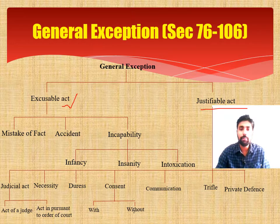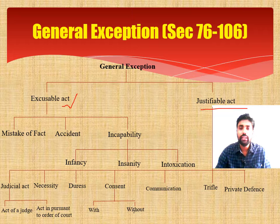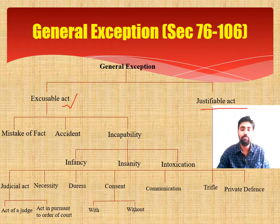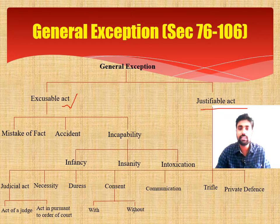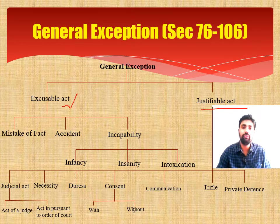If a child is above seven years but below twelve years and commits a crime, whether he shall be responsible for the offense is studied under Section 83. Insanity — whether a person committing a crime in a state of insanity shall be punished — is under Section 84. Intoxication is covered under Sections 85 and 86, where we study what defenses are available if a person commits an offense in a state of incapability.